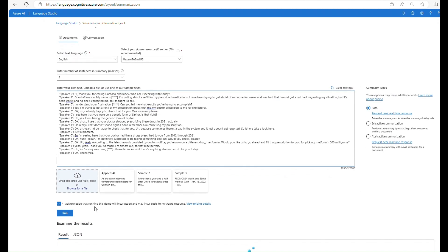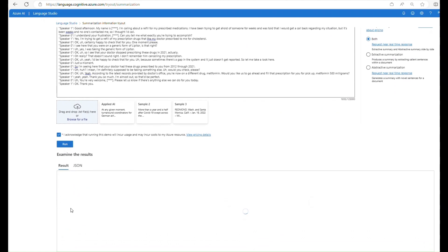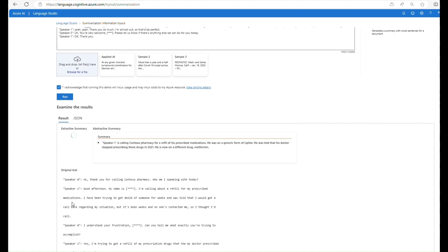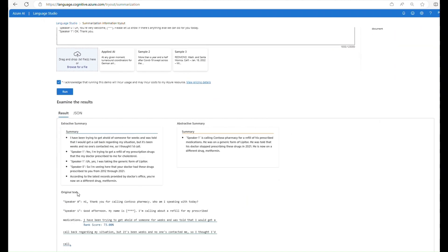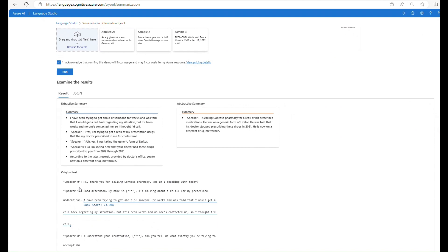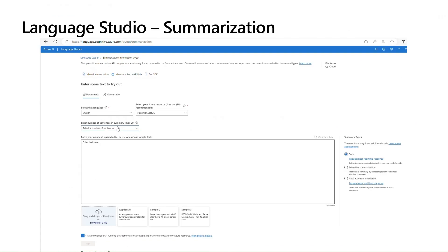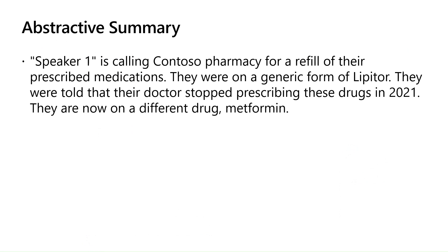We can choose to generate two types of summaries using this API. Extractive summarization provides a summary by extracting important sentences within the conversation. And abstractive summarization generates a summary that captures the overall main idea of the conversation. For the purposes of our scenario, abstractive summarization may help to give us more clear and concise summaries for quick use by the call center representative or an escalating manager.